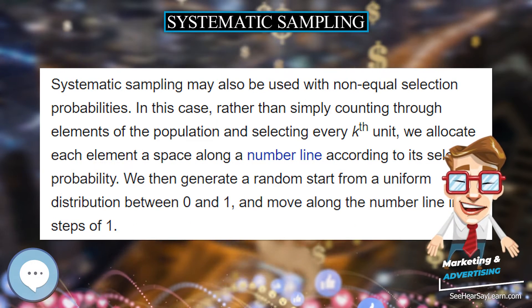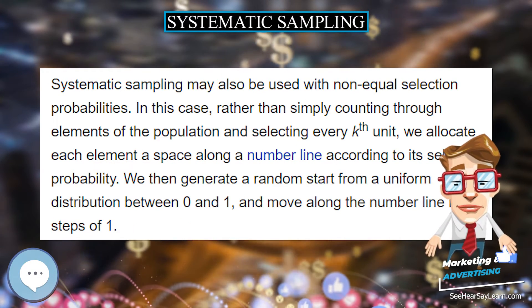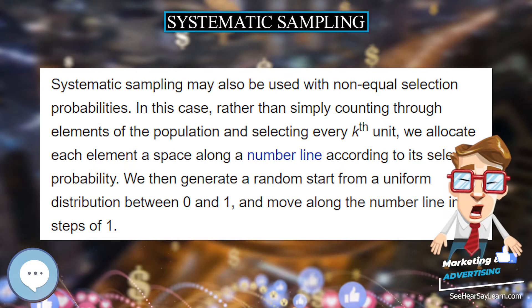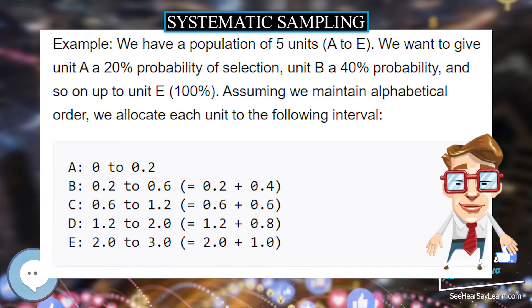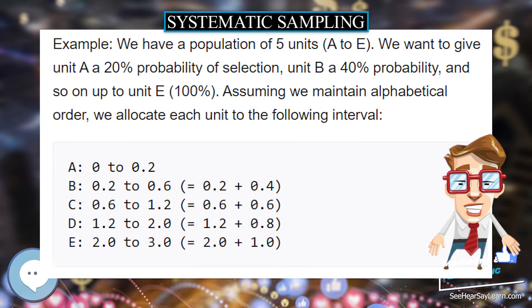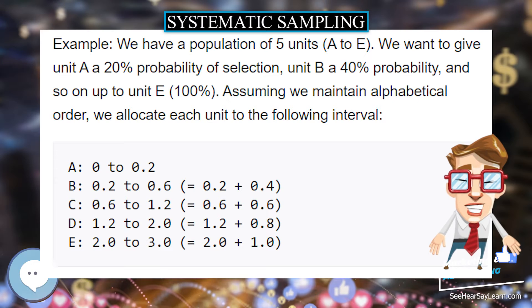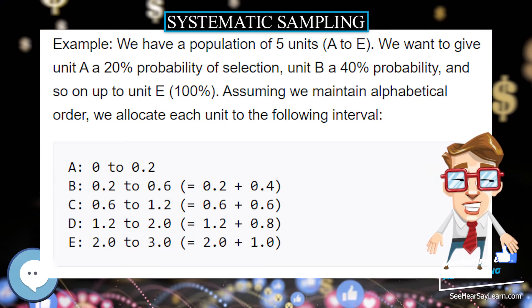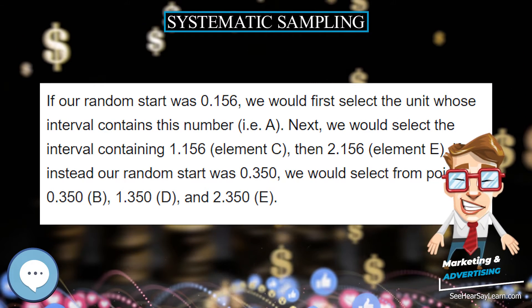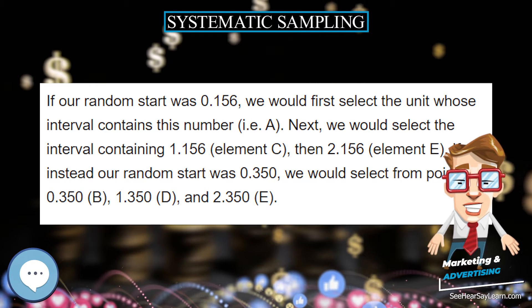If the random starting point is 3.6, then the houses selected are 4, 20, 35, 50, 66, 82, 98, and 113, where there are 3 cyclic intervals of 15 and 4 intervals of 16.